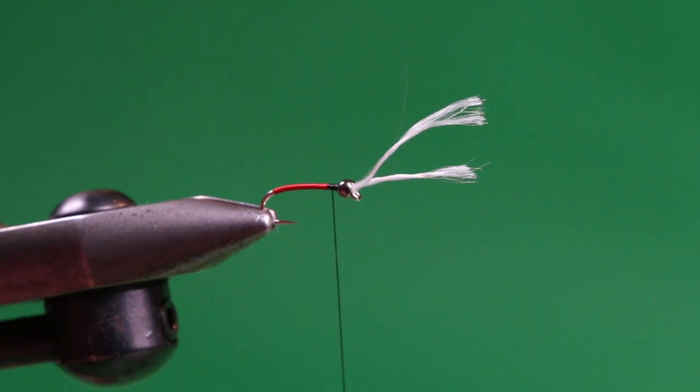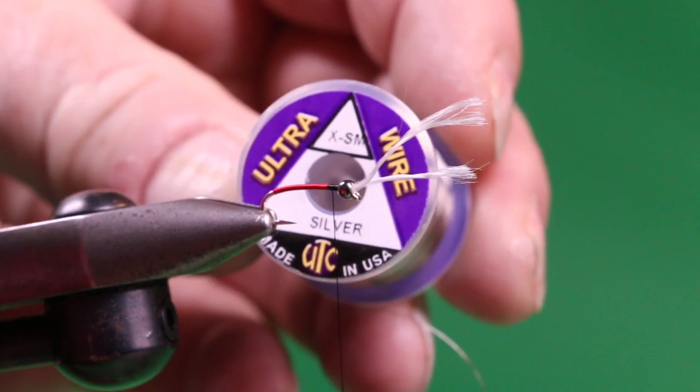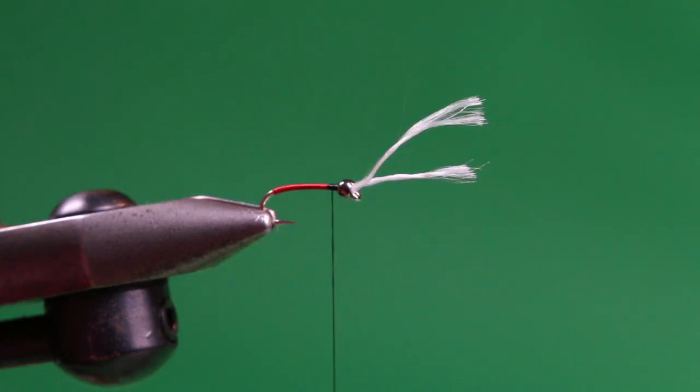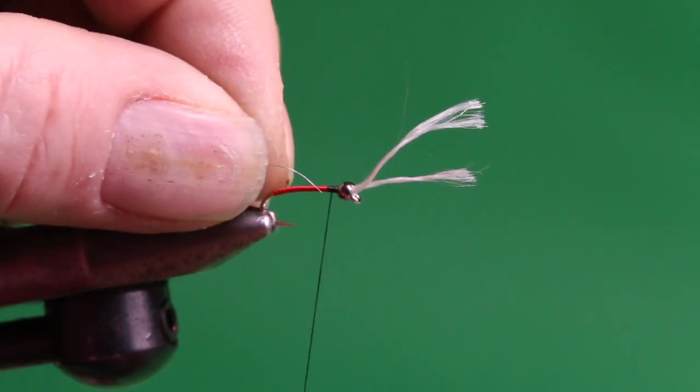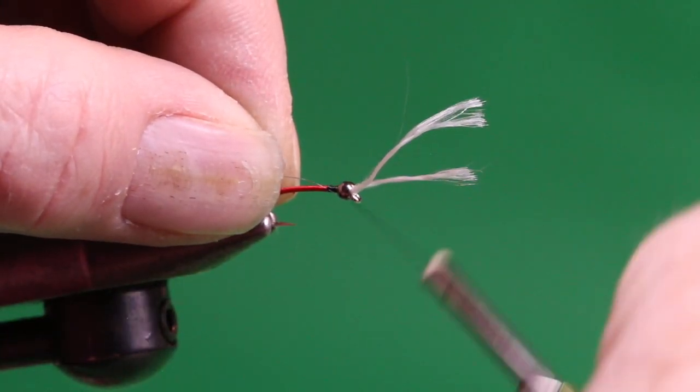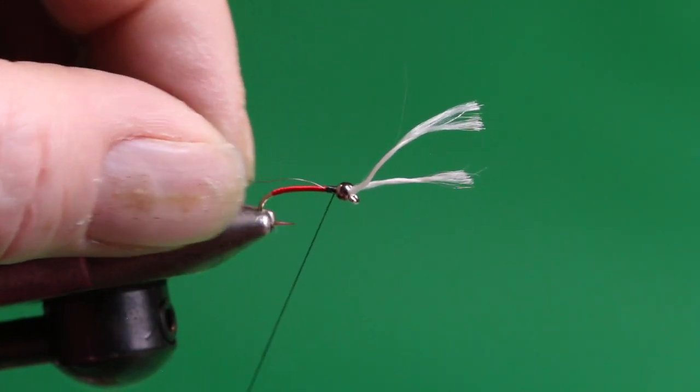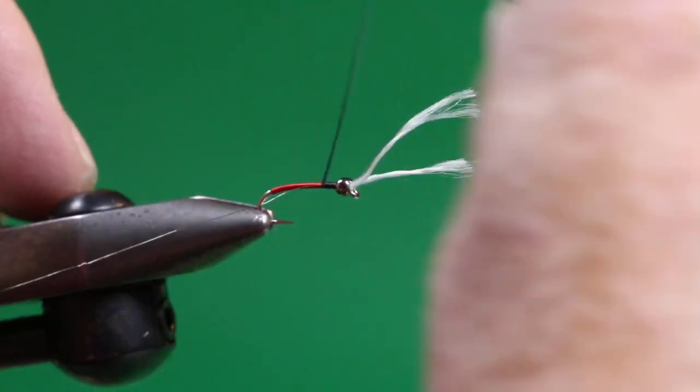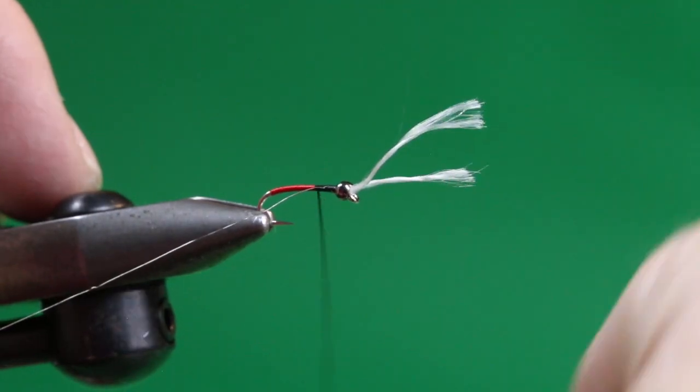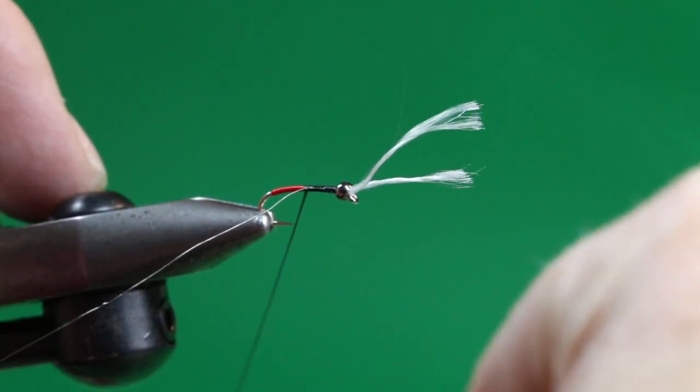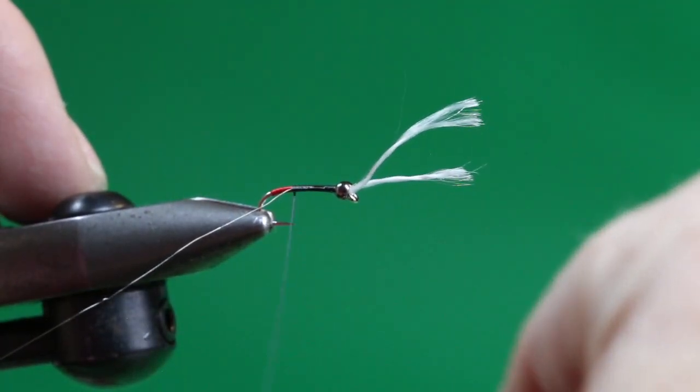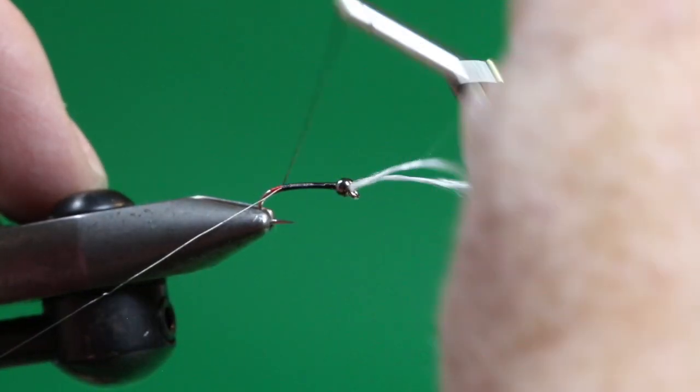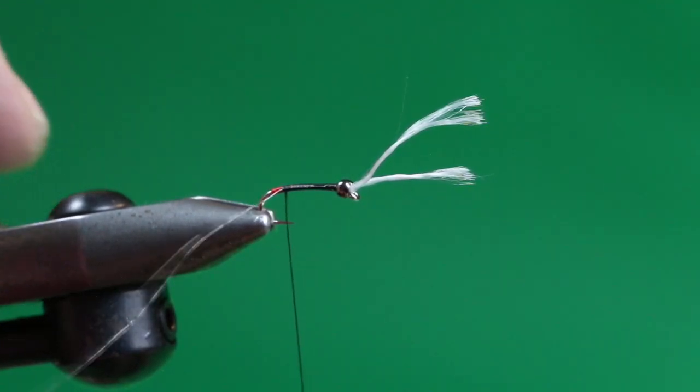Now for the ribbing, we're going to use a subtle rib. In this case, some extra small UTC silver. You could certainly, if you don't have that handy, a single strand of silver crystal flash would work as well. Very narrow and subtle. So what we're going to do is just take a length of this silver wire, get that tied in behind the bead, give that bobbin that counter spin. And we're just going to see how this thread is flossing out, nice flat wraps, securing this wire down the side of the shank. About halfway between the point and the barb. And that gives you that little red butt peeking out.